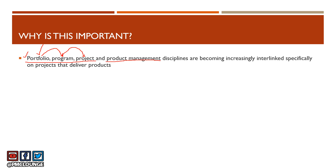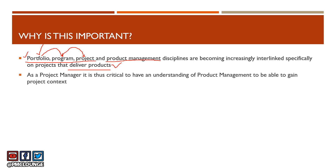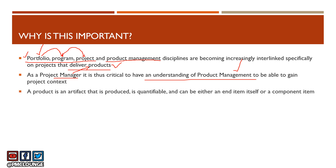This is more true for projects that actually deliver products. A project can deliver a product, a component of a product, some sort of improvement, or services. But for projects that deliver products or a component of a product, you will find that the disciplines of portfolio, program, project, and product management are becoming increasingly interlinked. As a project manager working on such projects, it is critical to have an understanding of product management, because you are delivering products and need the context of the project you're working on.